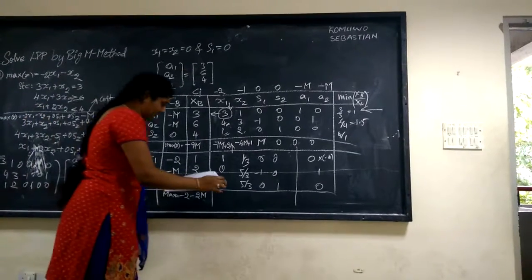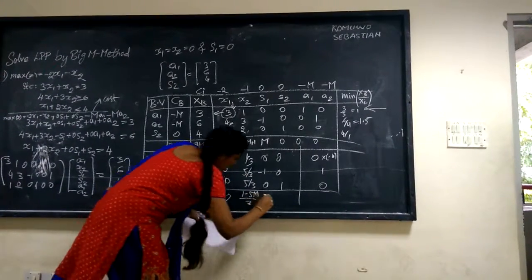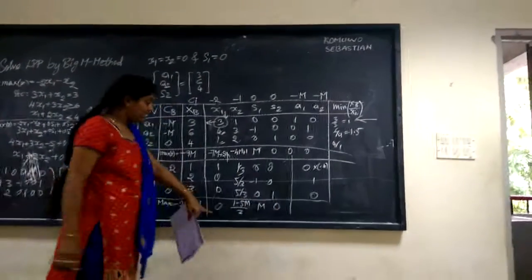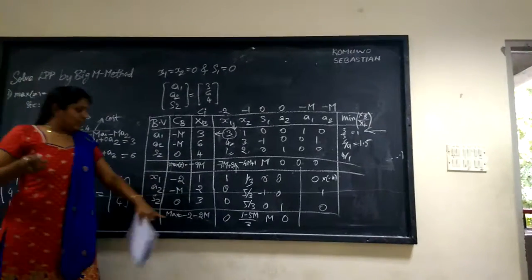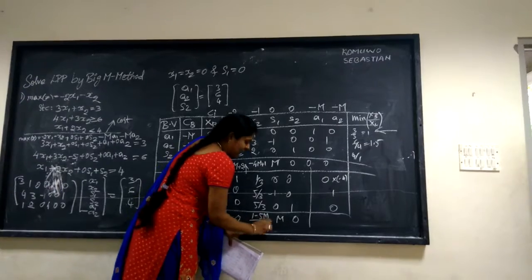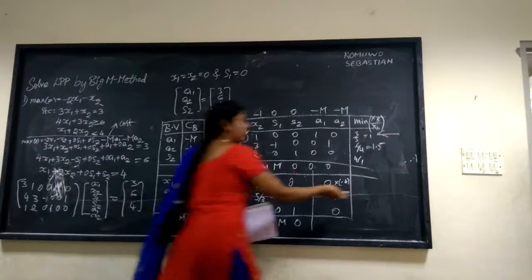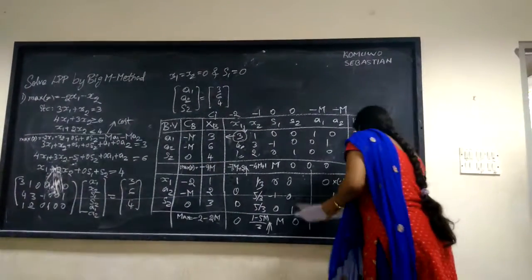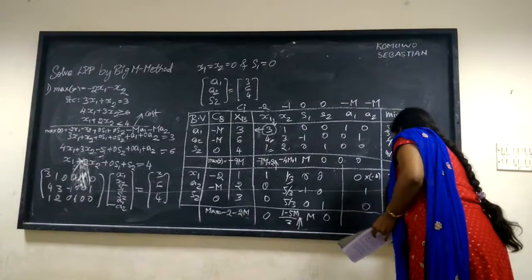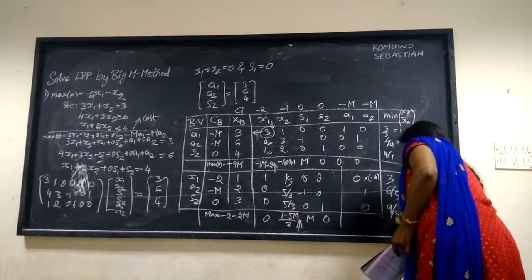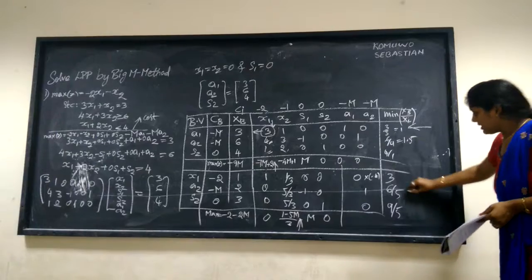The new delta j values are: 0, 1 − 5M, 5, 3M, and 0. Substituting m = 1 to find the most negative: 1 − 5M is the most negative term, so x2 column is the new pivot column. Computing xB/xi ratios: 1/3 (from row 1), 6/5 (from row 2), 9/5 (from row 3). The minimum is 6/5, so that becomes the new pivot row and key element.